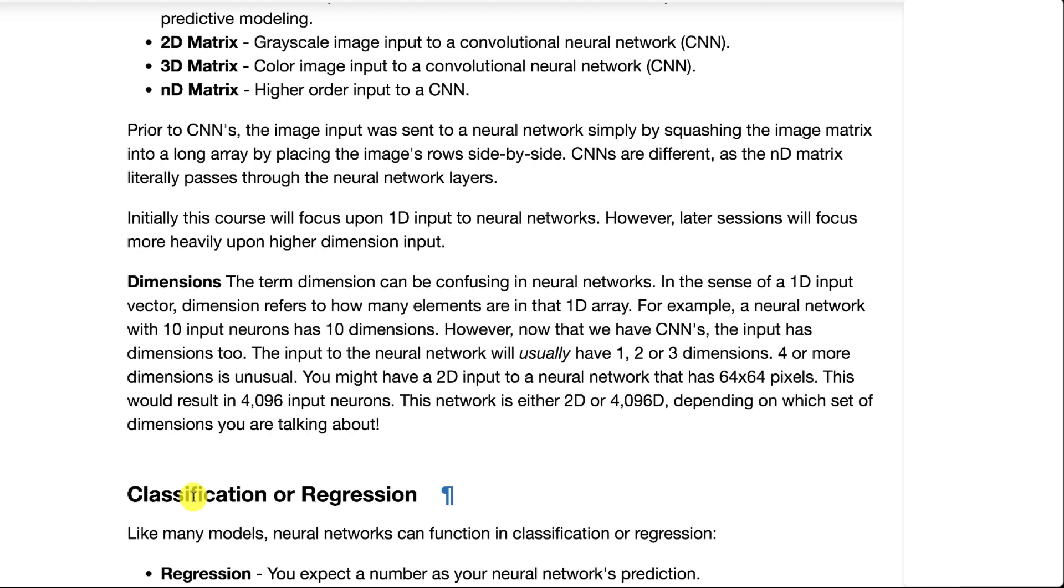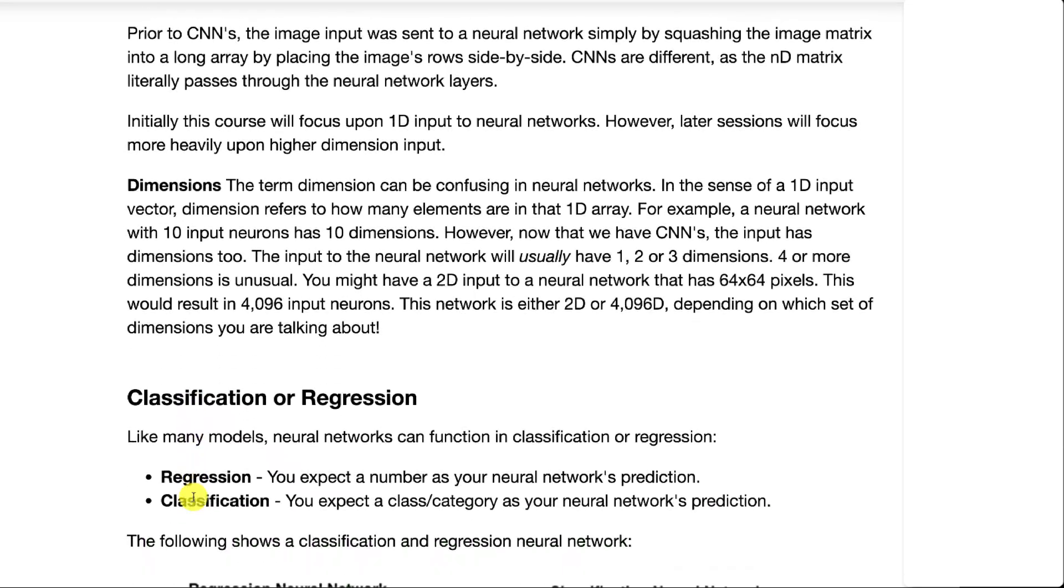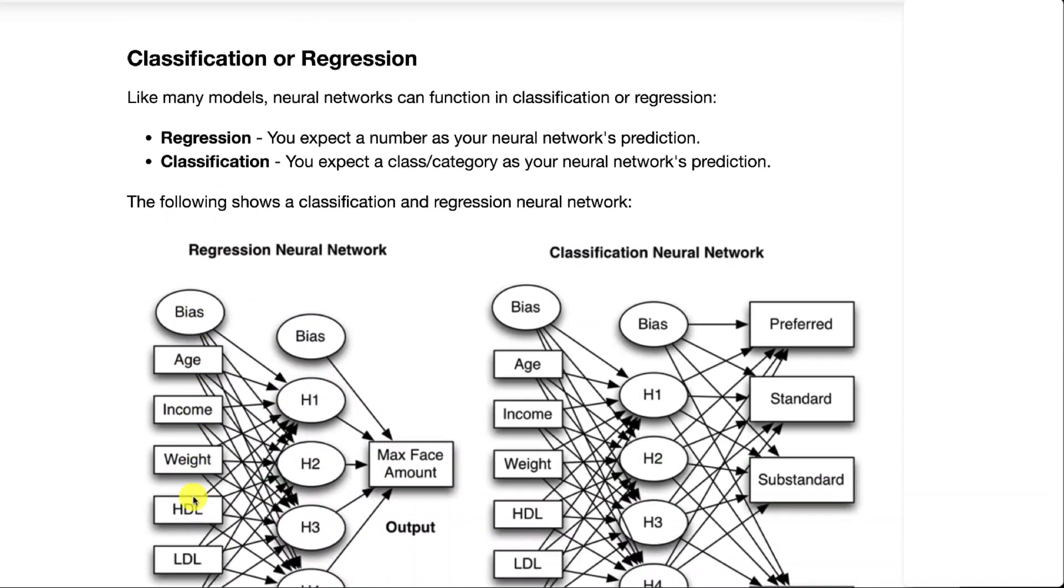Dimensions can also refer to the number of weights that are in a neural network. Now traditional models, you would talk about regression and classification.